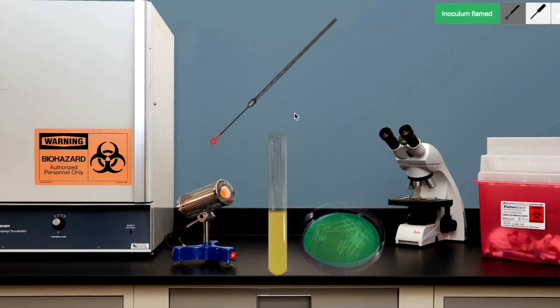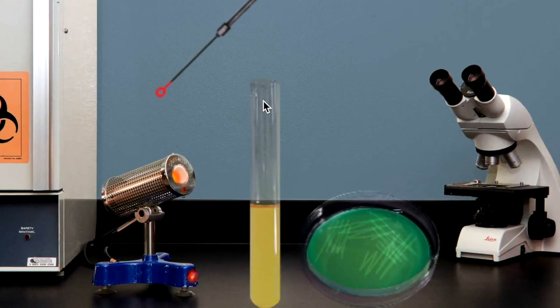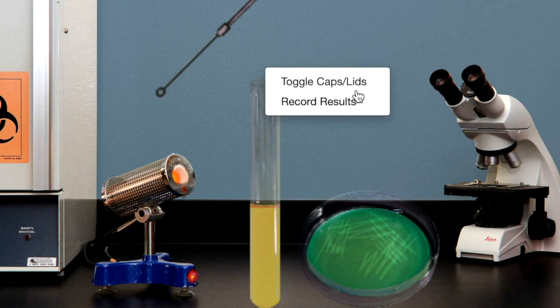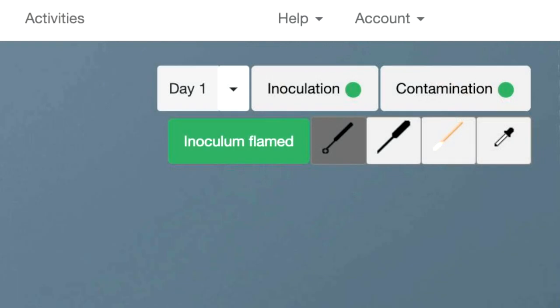Place the cursor over the mouth of the inoculum tube and click to bring up the option to toggle caps or lids, or double click. Do this to replace the tube cap and plate lid. Look at the traffic signals to ensure that you have two green lights indicating a successful tube to plate aseptic transfer.